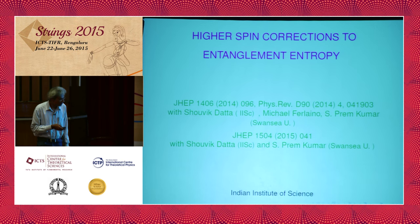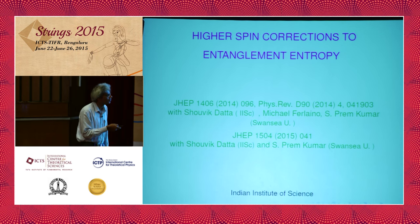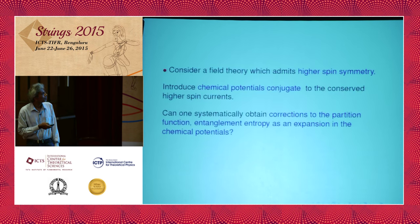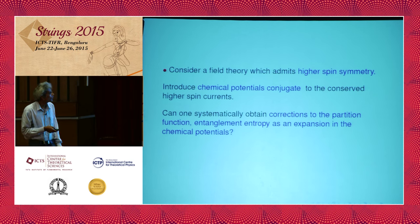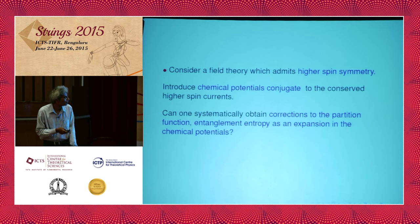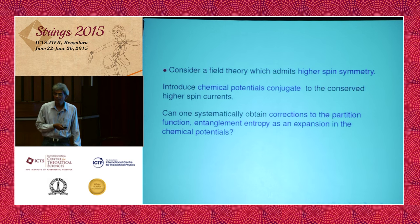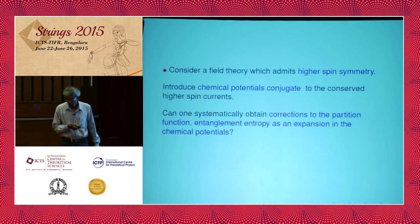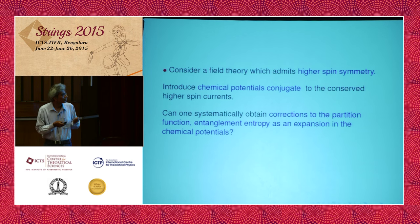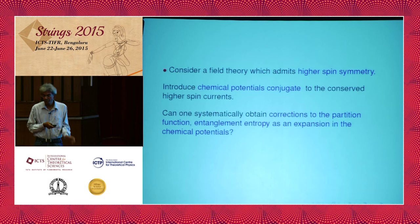Let me begin with motivation for the question I'll be asking through the talk. The question is simple: consider a field theory which admits higher spin symmetry — we have been hearing about that several times in this conference. What we want to do is introduce chemical potentials conjugate to these conserved higher spin currents, and ask whether we can systematically obtain corrections to the partition function and the entanglement entropy as an expansion in chemical potentials.